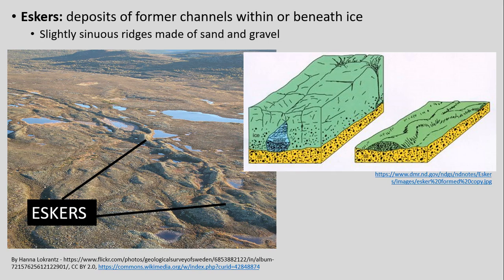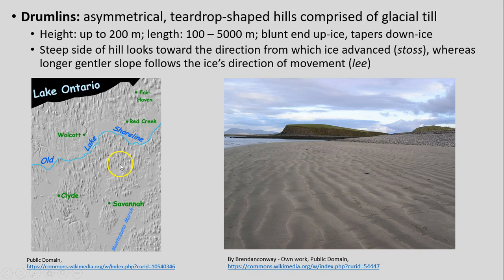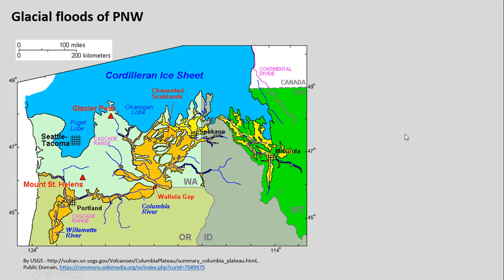Another example is drumlins — asymmetrical teardrop-shaped hills. Looking at them from the side or from above, there's a steeper slope on the front face and then a more mild slope showing the direction of the ice sheet's movement. These often occur in a series — drumlin fields. This example is from western New York state, where whole sets of drumlins all point towards Lake Ontario, showing the ice sheet moved relatively north or northwest. The sharp front face is the stoss side and the long drawn-out side is the lee side.